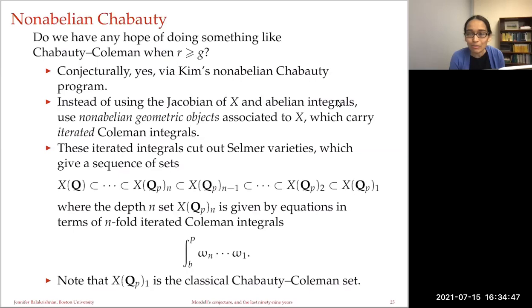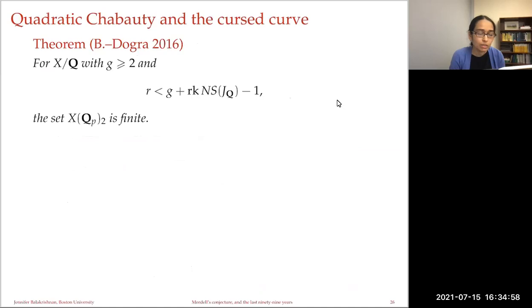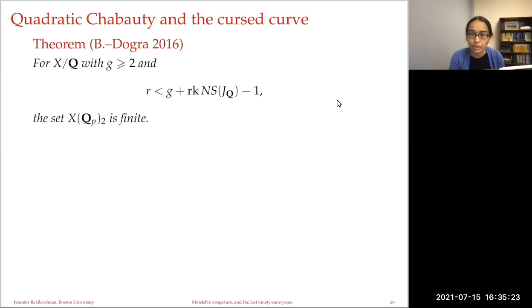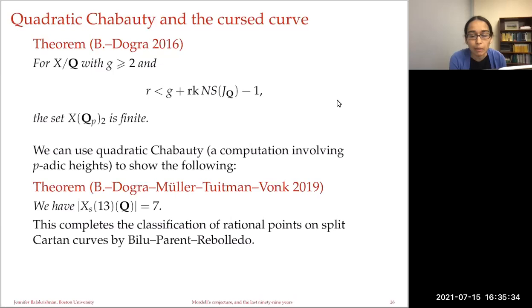There is also recent work of Alex Betts and others on bounding the number of zeros of these iterated Coleman integrals to prove bounds on the number of integral and eventually rational points on curves. I wanted to mention one result about the quadratic Chabauty set. In joint work with Netan Dogra, we showed that if a curve satisfies the Jacobian rank less than g plus the rank of the Néron-Severi minus one, then the second set X(Q_p)_2 — the quadratic Chabauty set — is finite. We can make this effective in some cases.